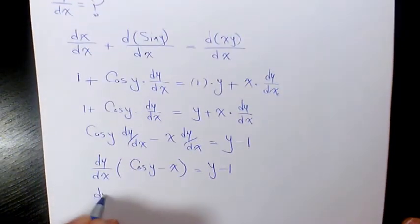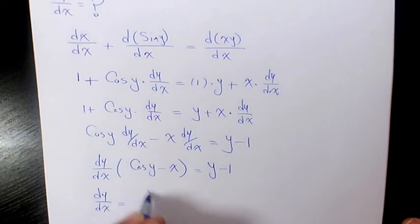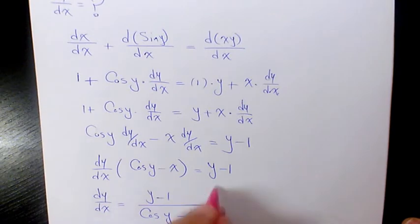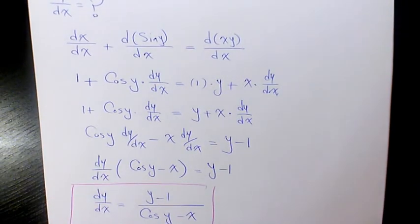So dy/dx equals (y minus 1) over (cosine y minus x). That's the final answer to this question.